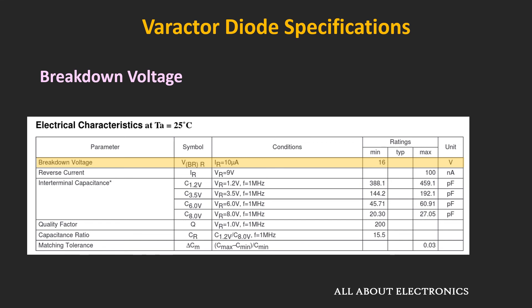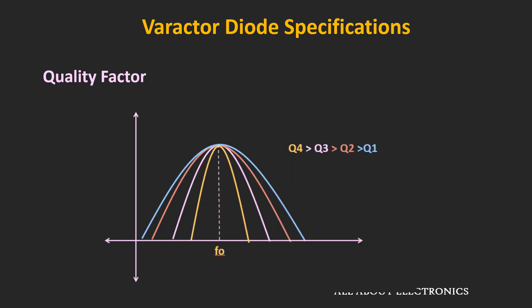Another very important parameter is the Q factor. When varactor diodes are used in tuning circuits or RF filters, a diode with a very high Q factor should be selected for sharp response. That means for good selectivity, the value of the Q factor should be as high as possible.